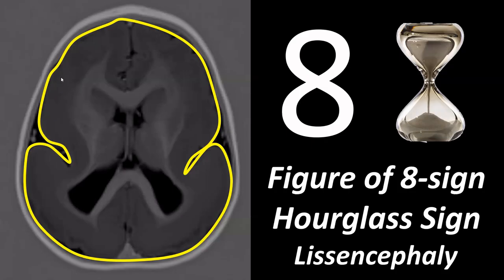The cortex is abnormally thick because the neurons have not reached their final position. Because there is no organization of the cortex, there are no sulci, no gyri, and at best we have some rudimentary development of the Sylvian fissure, leading to a figure-of-eight or hourglass sign.